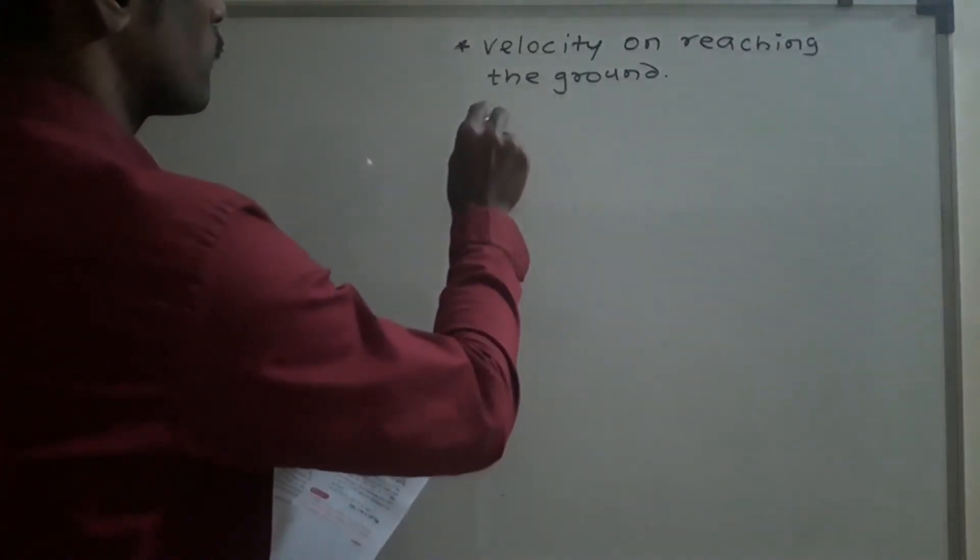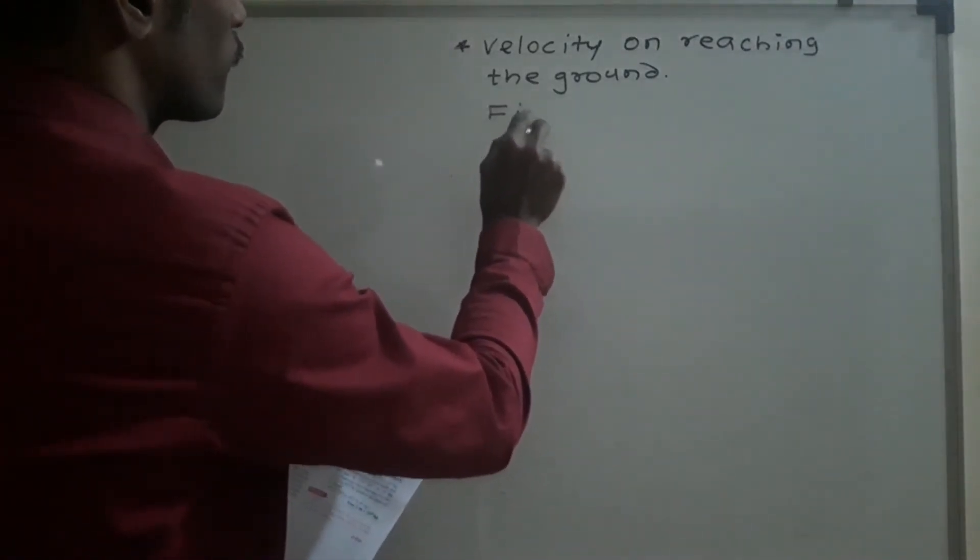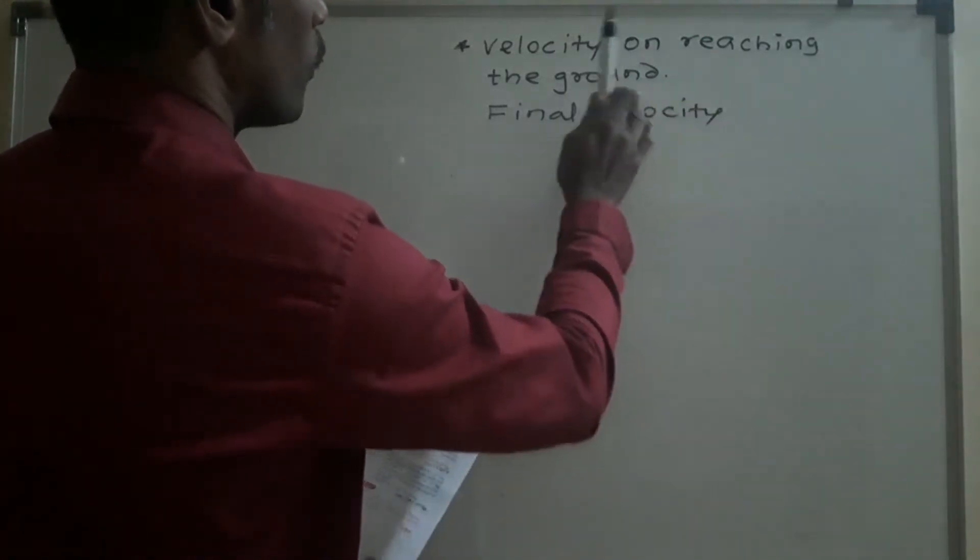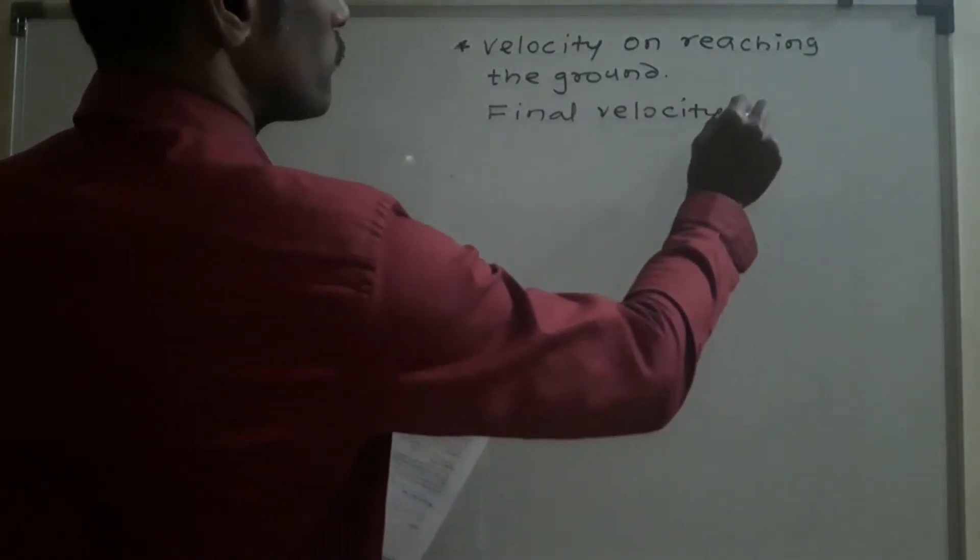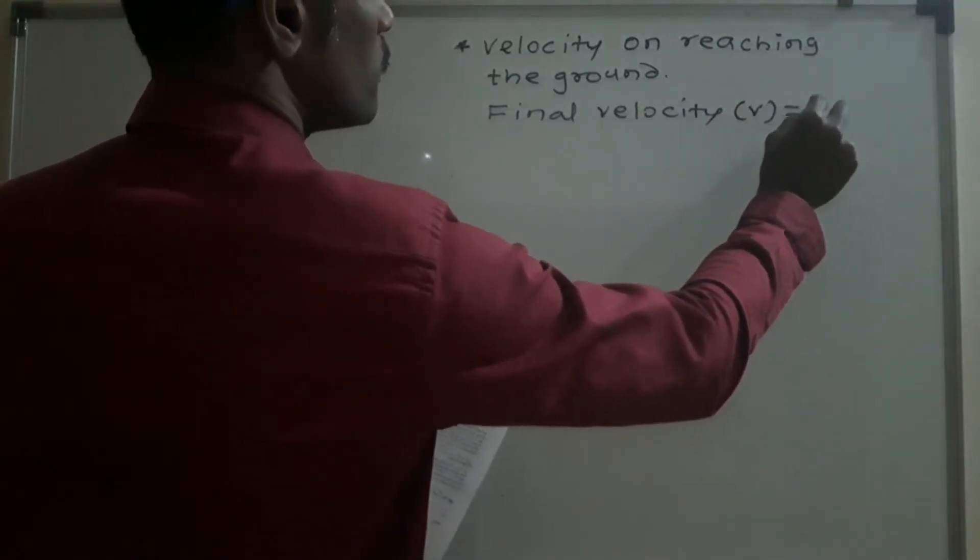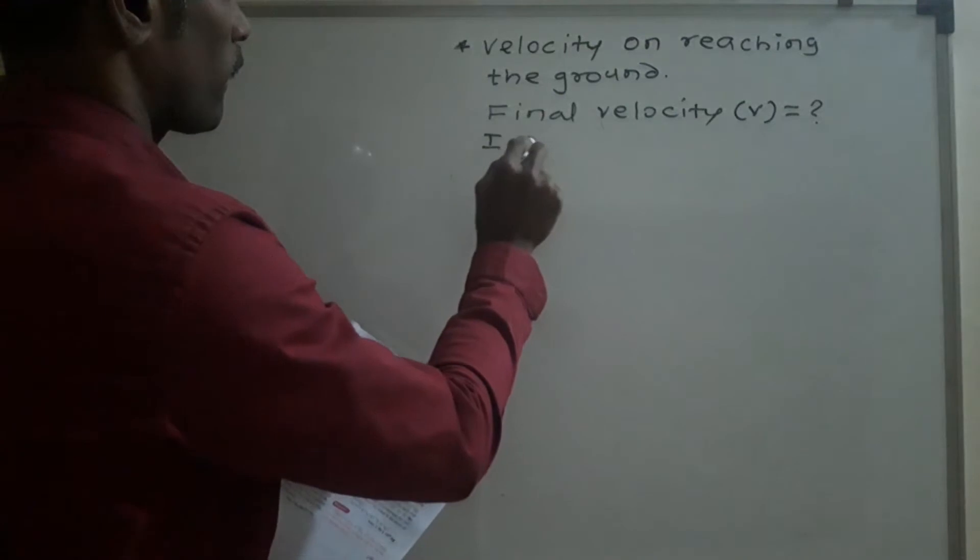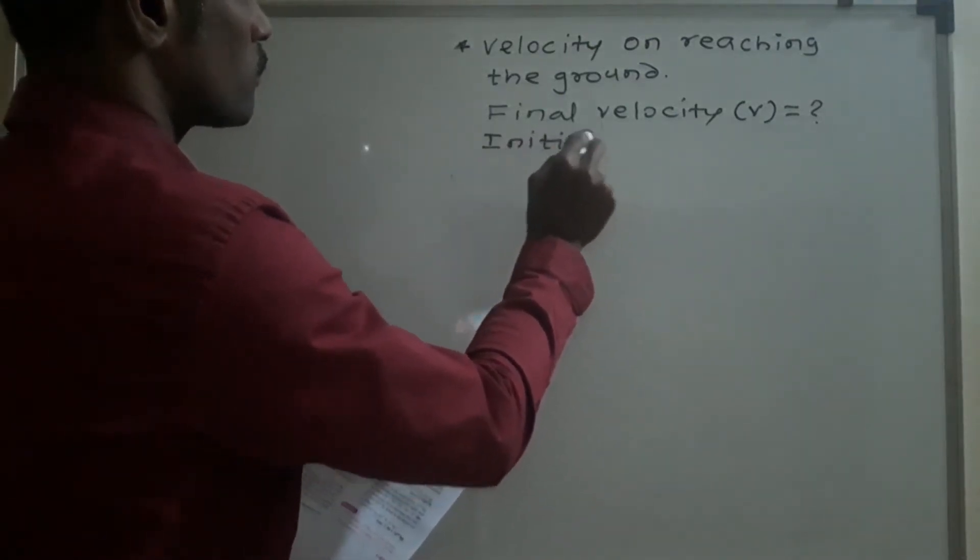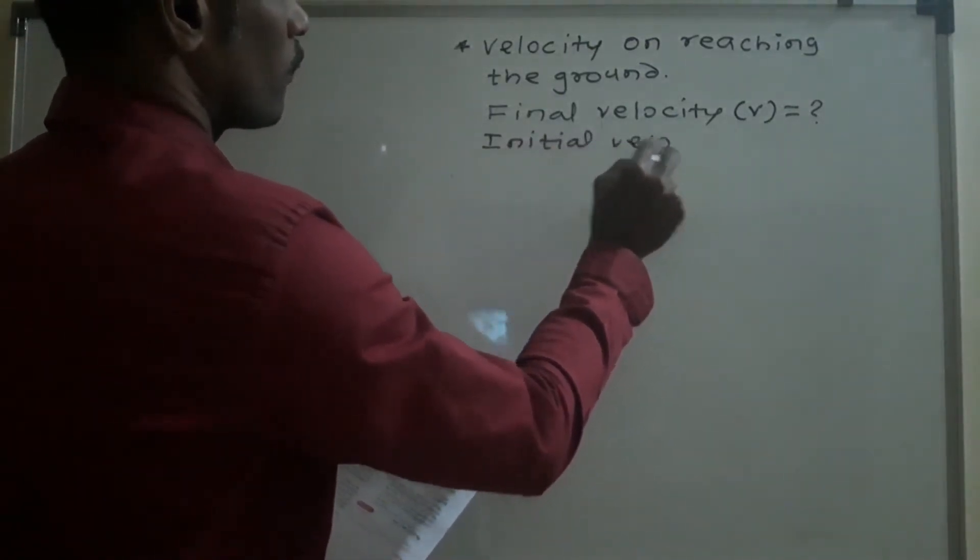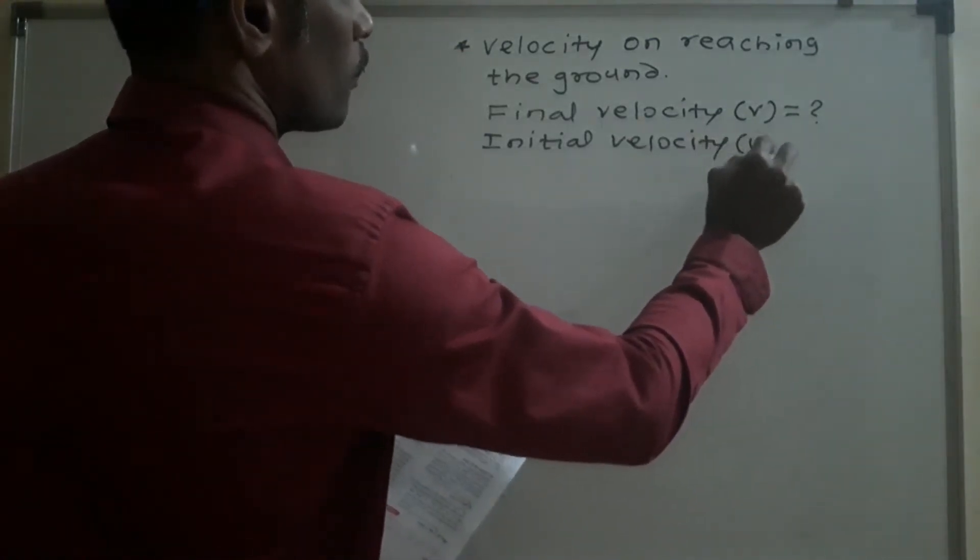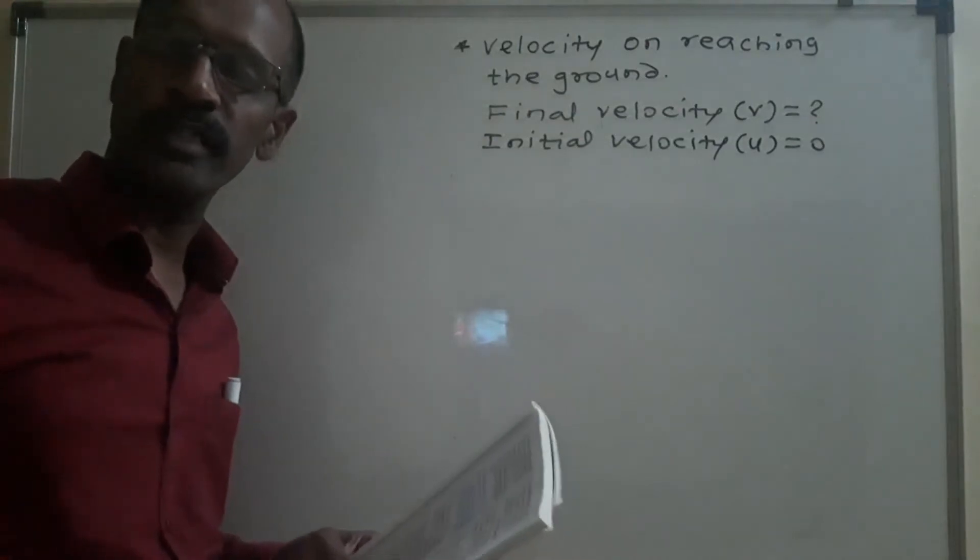Now here, final velocity v is equal to question mark, initial velocity u is equal to 0 meter per second.